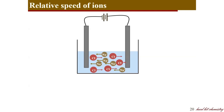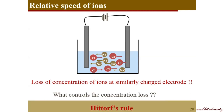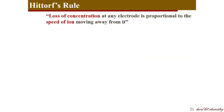Now we can move on to the speed of ions — the point which Arrhenius kept silent about. How does the mobility of ions contribute to conductance? The observation is that the loss of concentration at an electrode during electrolysis corresponds to the mobility of ions. This idea was given by Hittorff's rule.